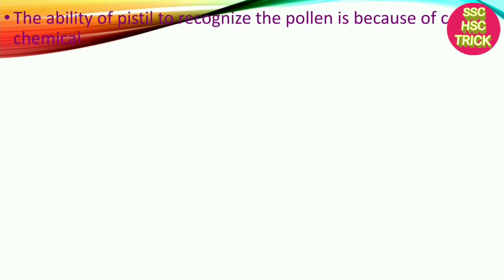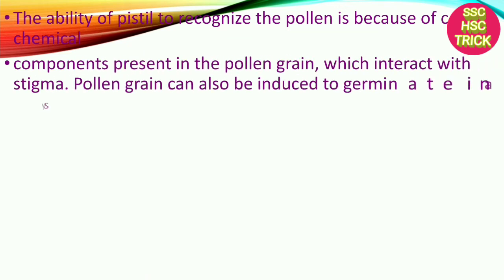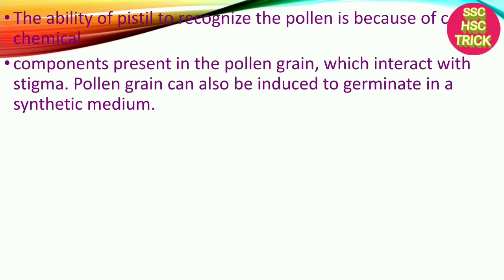The ability of the pistil to recognize pollen is because of certain chemicals present in the pollen grains which interact with the stigma.